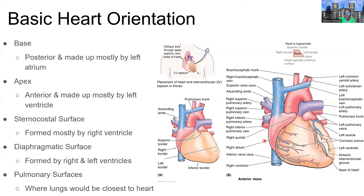Let's look at the position of the heart and some of its surfaces and borders. The base of the heart is the top back portion, mainly formed by the left atrium, and it is pressed against the esophagus. The apex is the pointed region, usually more to the left, formed mainly by the left ventricle, and it is in close connection with the lingula of the left lung.